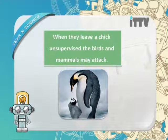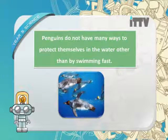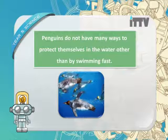When they leave a chick unsupervised, birds and mammals may attack. Penguins do not have many ways to protect themselves in the water other than by swimming fast. Penguins cannot fly, but when they swim they move so fast it looks like they're flying in water. So penguins protect their young both on land and in the sea by swimming fast.